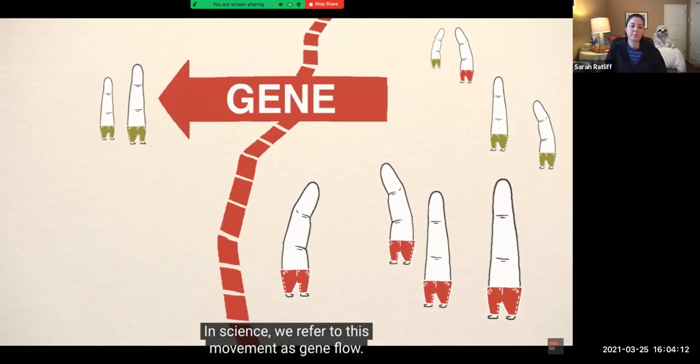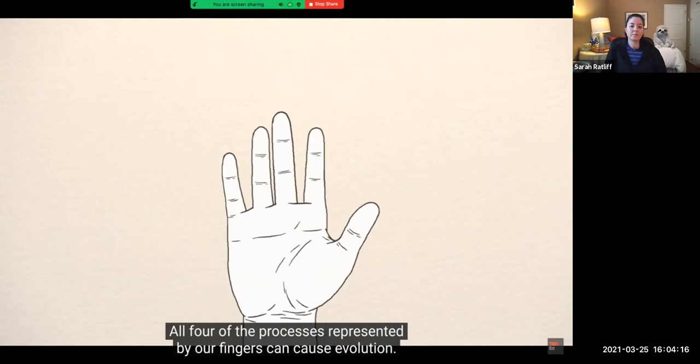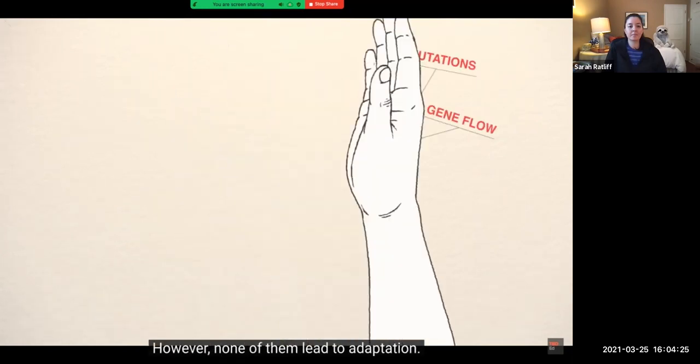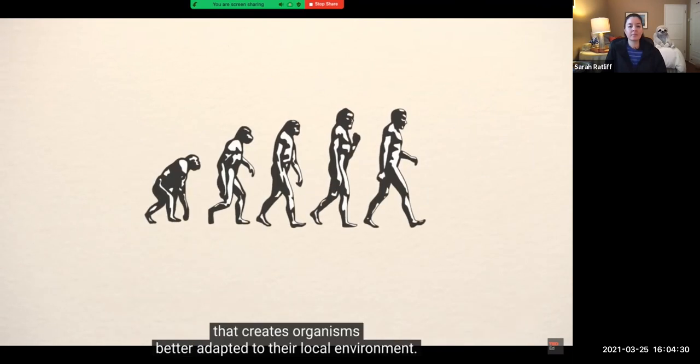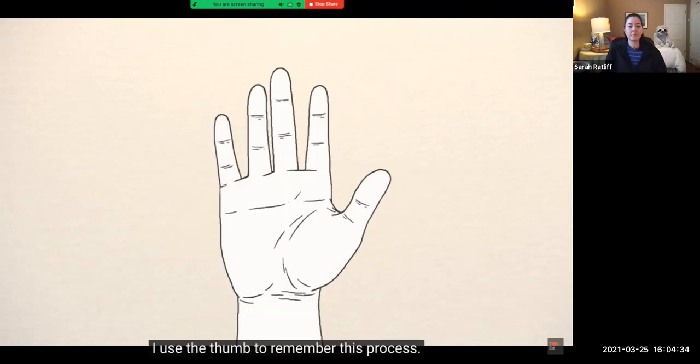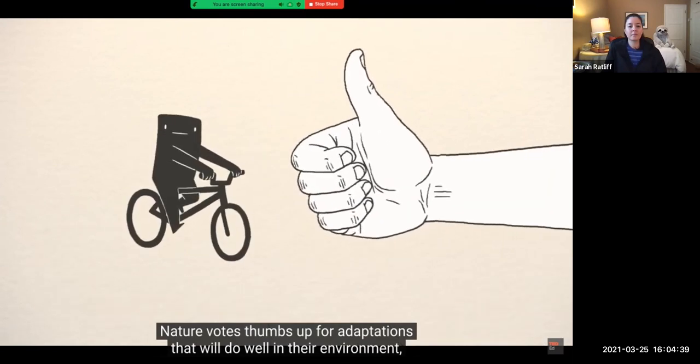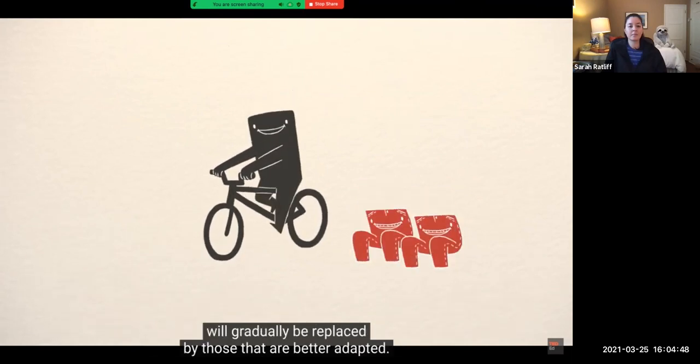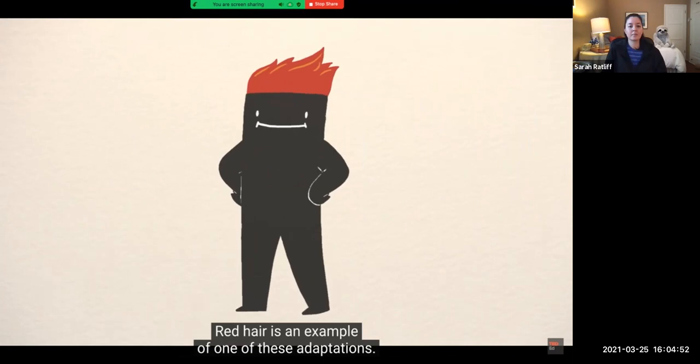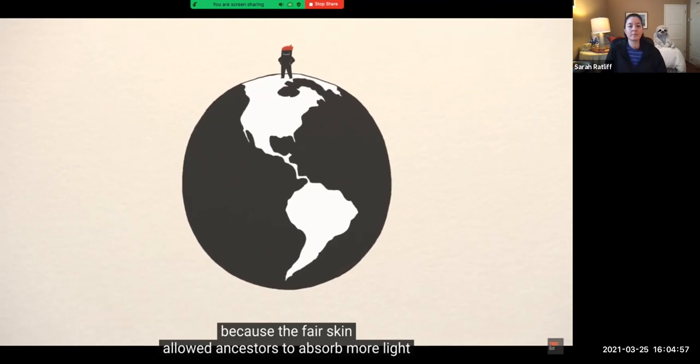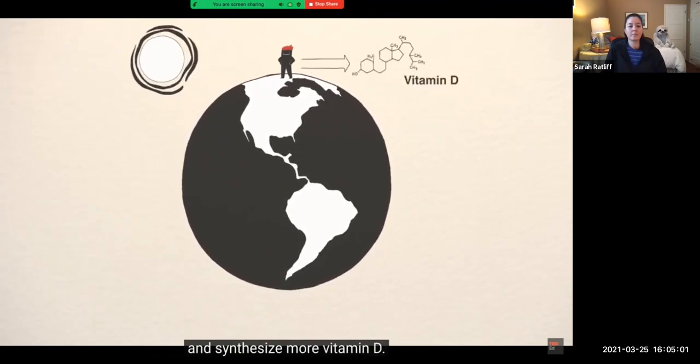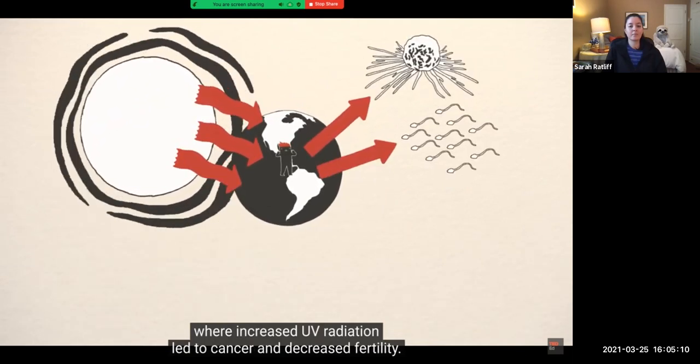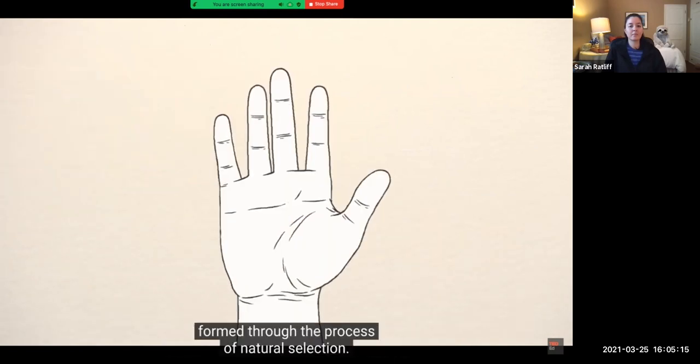All four of the processes represented by our fingers can cause evolution: small population size, non-random mating, mutations, and gene flow. However, none of them lead to adaptation. Natural selection is the only process that creates organisms better adapted to their local environment. I use the thumb to remember this process. Nature votes thumbs up for adaptations that will do well in their environment and thumbs down to adaptations that will do poorly. The genes for individuals that are not adapted for their environment will gradually be replaced by those that are better adapted. Red hair is an example of one of these adaptations. Red hair is an advantage in the northern climates because the fair skin allowed ancestors to absorb more light and synthesize more vitamin D. Thumbs up. However, this was a disadvantage in the more southern climates where increased UV radiation led to cancer and decreased fertility. Thumbs down. Even the thumb itself is an adaptation formed through the process of natural selection.